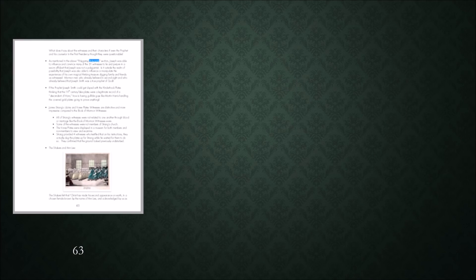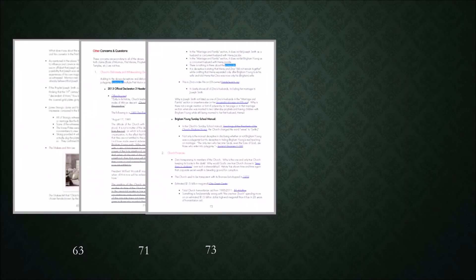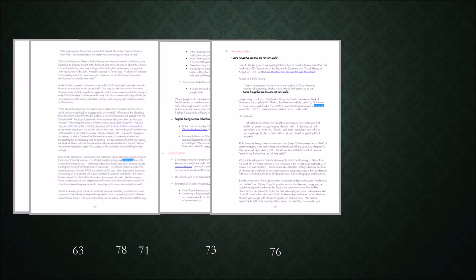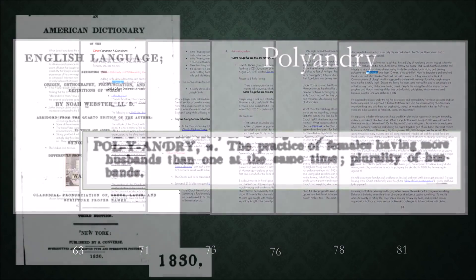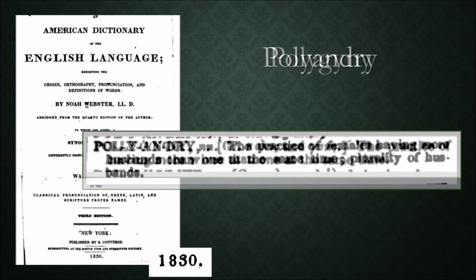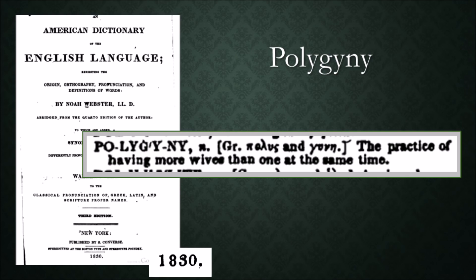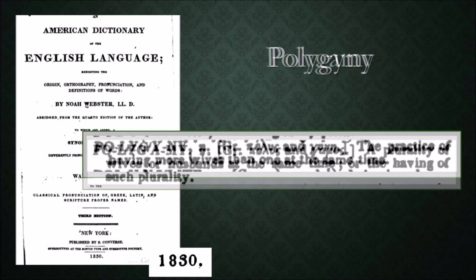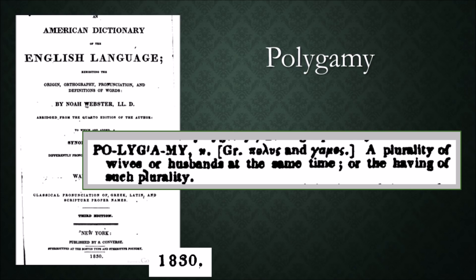This issue seems to have been rather bothersome to the author of the CES Letter because he refers to it again six additional times. Webster's 1830 Dictionary defines polyandry as the practice of females having more husbands than one at the same time — plurality of husbands. In contrast, it defines polygyny as the practice of having more wives than one at the same time. Traditional polygamy, or a plurality of wives, is really polygyny. The word polygamy actually means a plurality of wives or husbands at the same time. We will use the literal terms of polyandry and polygyny in this video.